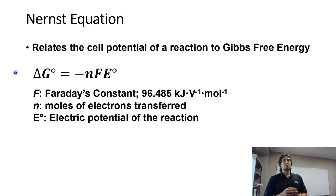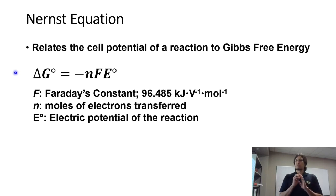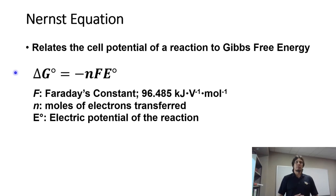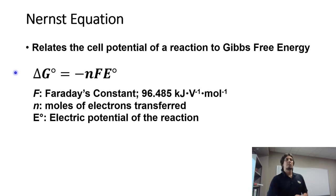What's important to note about this equation: think about what sign delta G should be in order to be product-favored. Delta G is negative when it's product-favored. Notice there's a sign change in this equation, so a spontaneous or product-favored reaction — where delta G is negative — means that E-not has to be positive.